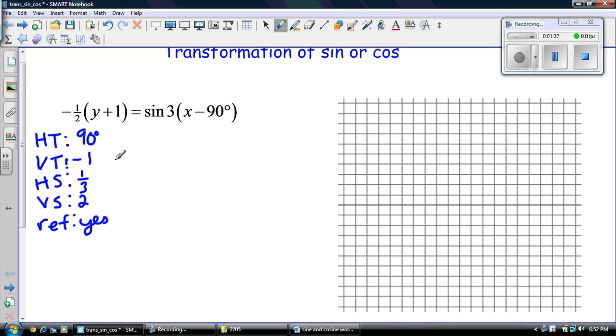From that, we can write our mapping rule. So that's the first thing we're going to do. So it's (x,y) goes to brackets. We start off with my horizontal stretch, so 1 over 3, x plus 90, so my horizontal translation, comma. Then we have our reflection, we represent it with a negative. And then I have my VS, 2, y minus 1. So that is my mapping rule right there.